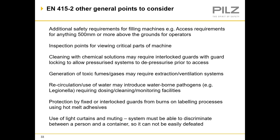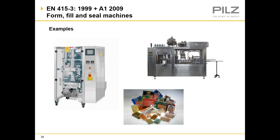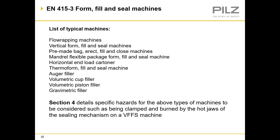EN 415 part 3 covers form fill and seal machines, of which there are many types: flow wrapping machines, vertical form fill and seal machines (typically used in the snacks industry for bags of crisps), pre-made bag erect fill and close machines, horizontal end-load cartoners, volumetric cut fillers, and gravimetric fillers. Section 4 details specific hazards for these machine types, such as being clamped or burned by the hot jaws of the sealing mechanism on a vertical form fill and seal machine — these are quite dangerous machines.